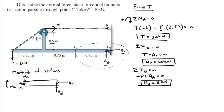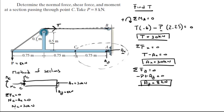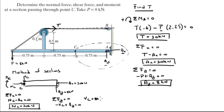The shear will be coming down, and the moment — let's say the moment is going this way. We have Ax at 30 kN and Ay at 8 kN. Sum of the forces in x equals 0: the normal minus Ax equals 0, so the normal comes out to be 30 kN. Sum of the forces in y equals 0: the shear coming down but Ay coming up equals 0, so the shear is equal to 8 kN.